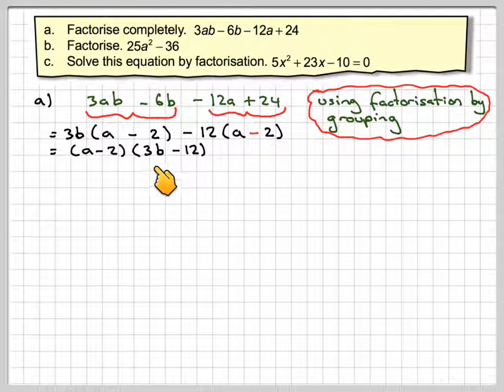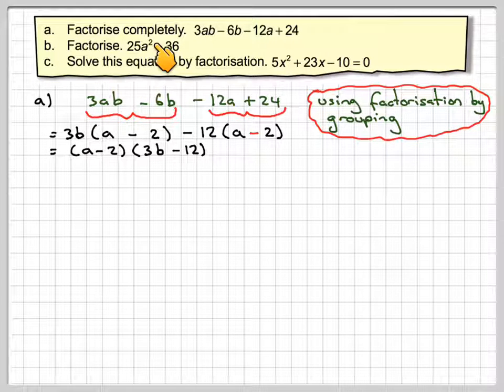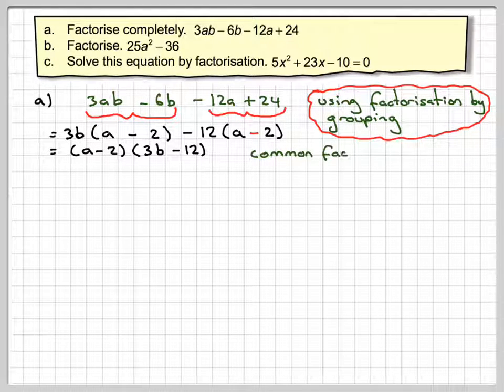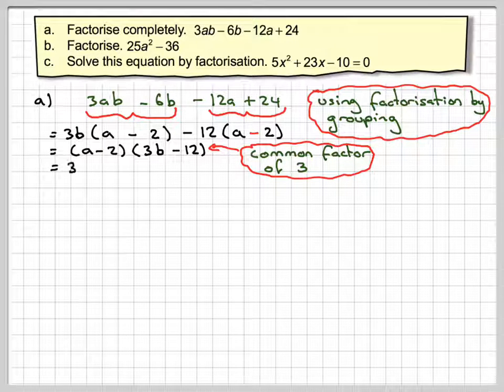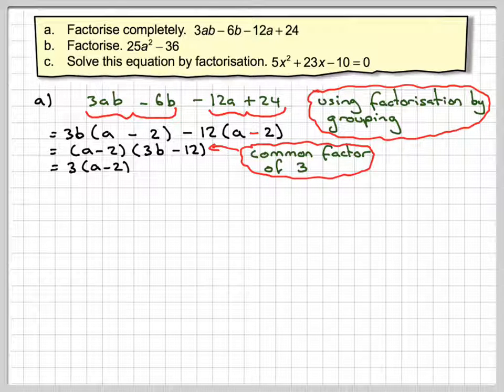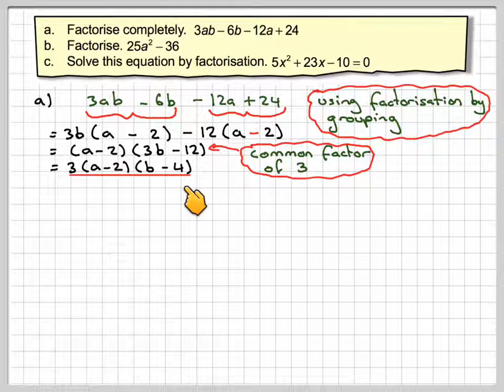Now there is a common factor of 3 here, so we're going to take that out because it says factorize completely. So we'll take that out as well. So we're going to have 3, brackets, a minus 2, and then we're just going to have b minus 4.